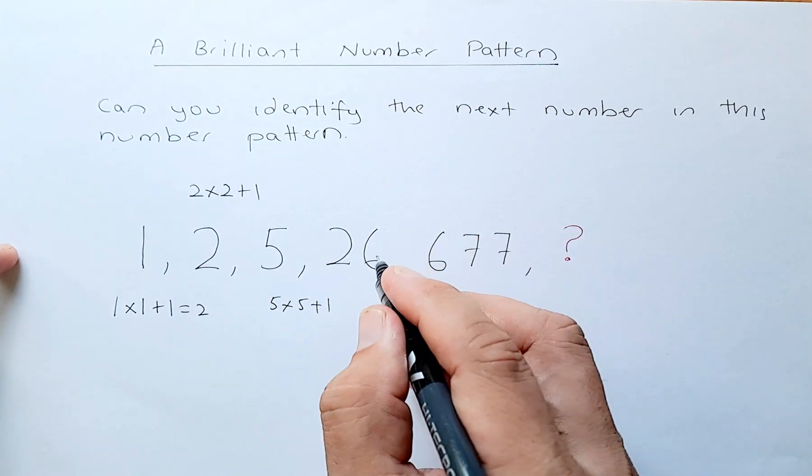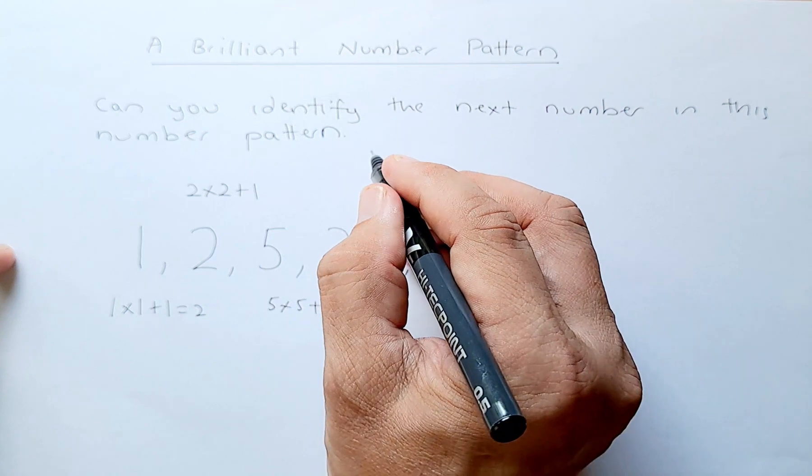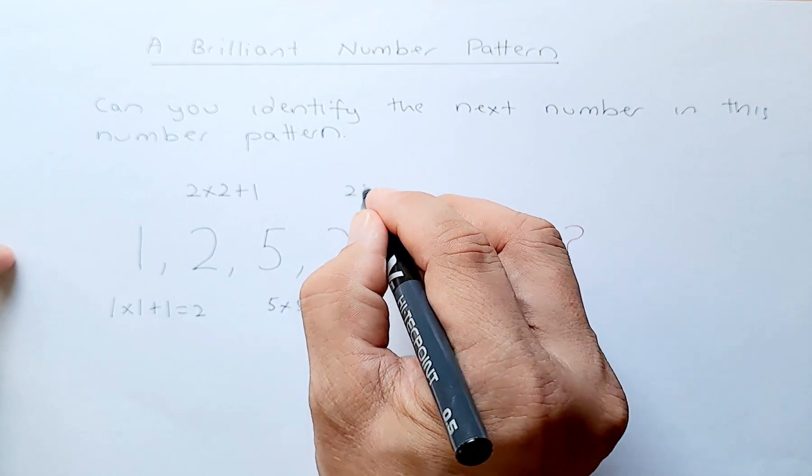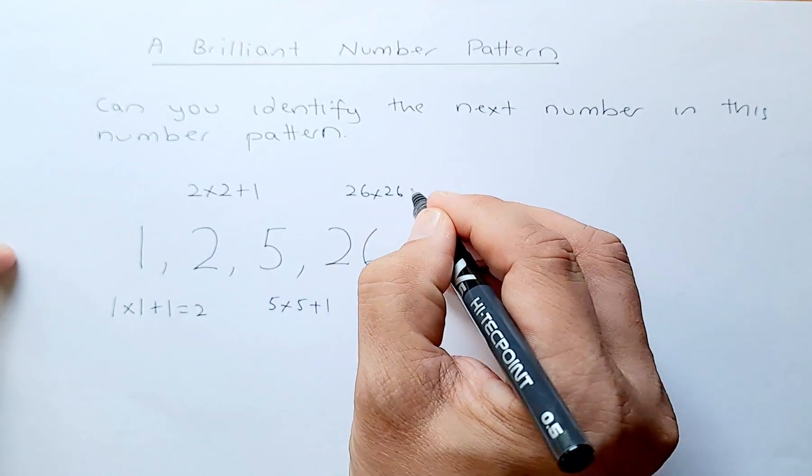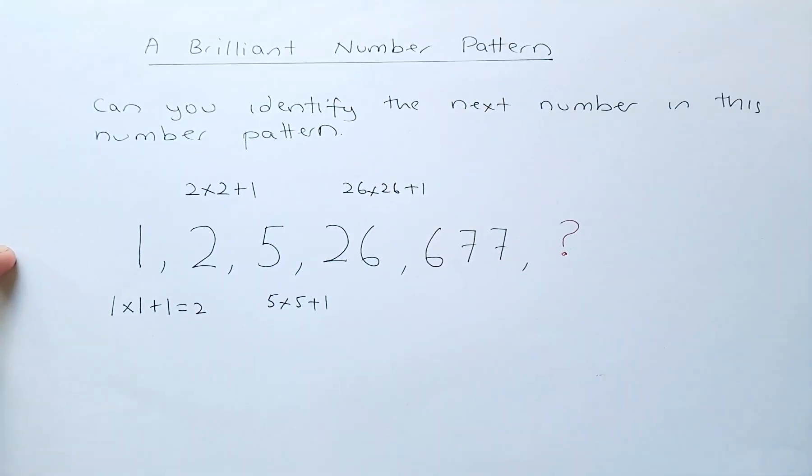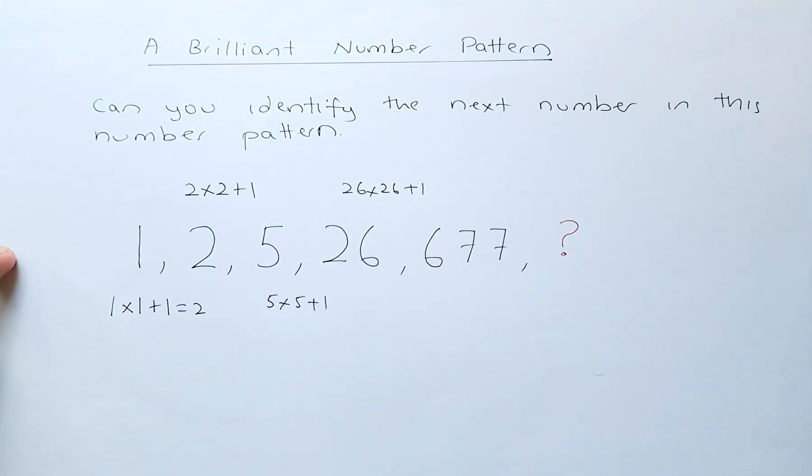To get to 677, they are going to give you 26 multiplied by 26 plus 1, and that will give you a total of 677.